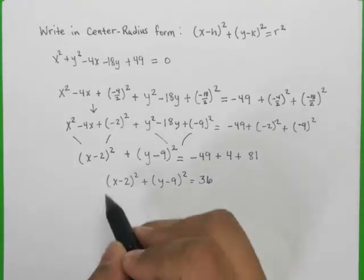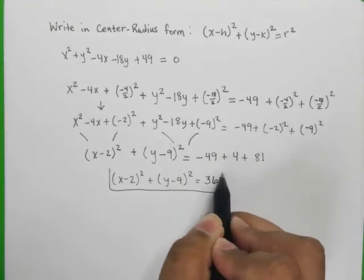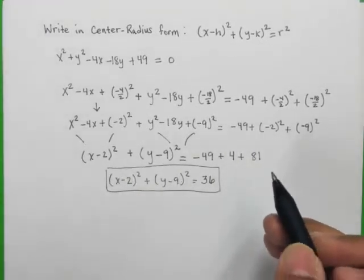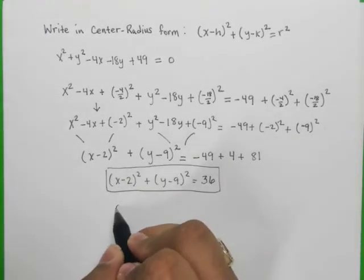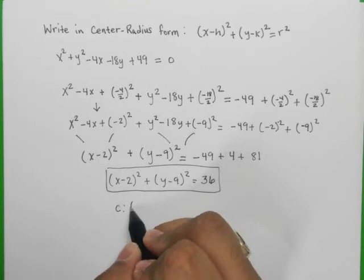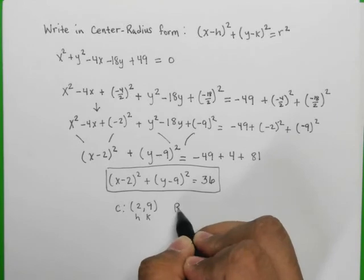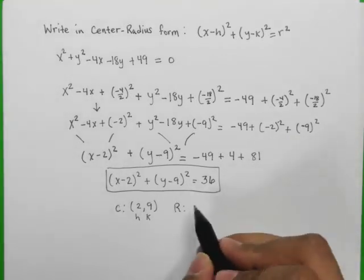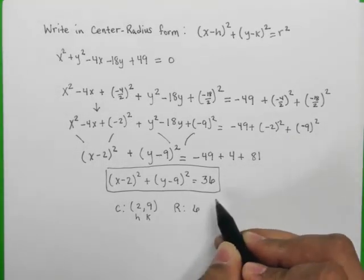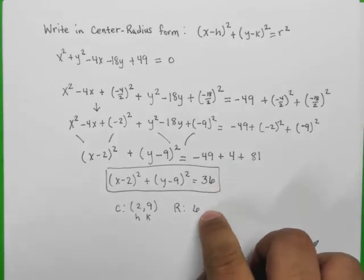So this is the equation of the circle. Now let's see what we know about this circle. This is the circle with a center at 2, 9. So this is our h and our k, and our radius for this circle happens to be 6, because that's the square root of the 36 there.